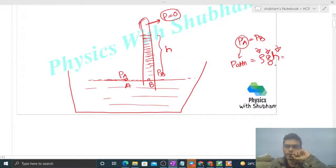So we can say that mercury that is 76 centimeter should be equal to density of water into g into height of water, and atmospheric pressure.